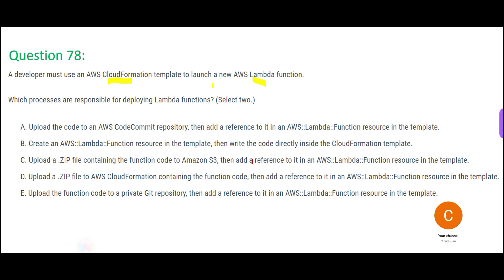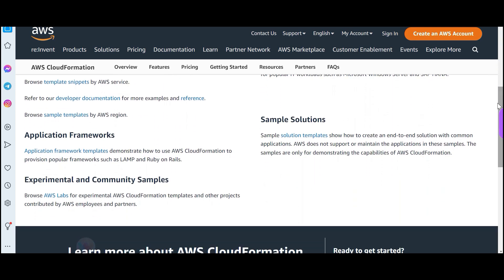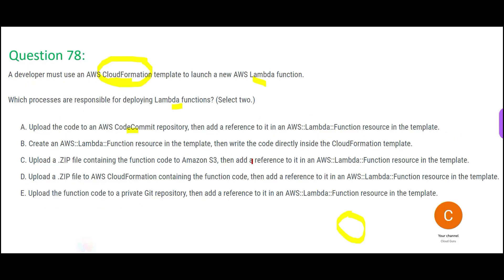To deploy a Lambda function, which steps are correct? One option says upload the code to a CodeCommit repository. The way I would structure it: I would put the code somewhere — say, a zip file containing the function code — and then include a reference to it in the CloudFormation template. The options are: CodeCommit, S3, or storing it directly in the CloudFormation template itself.